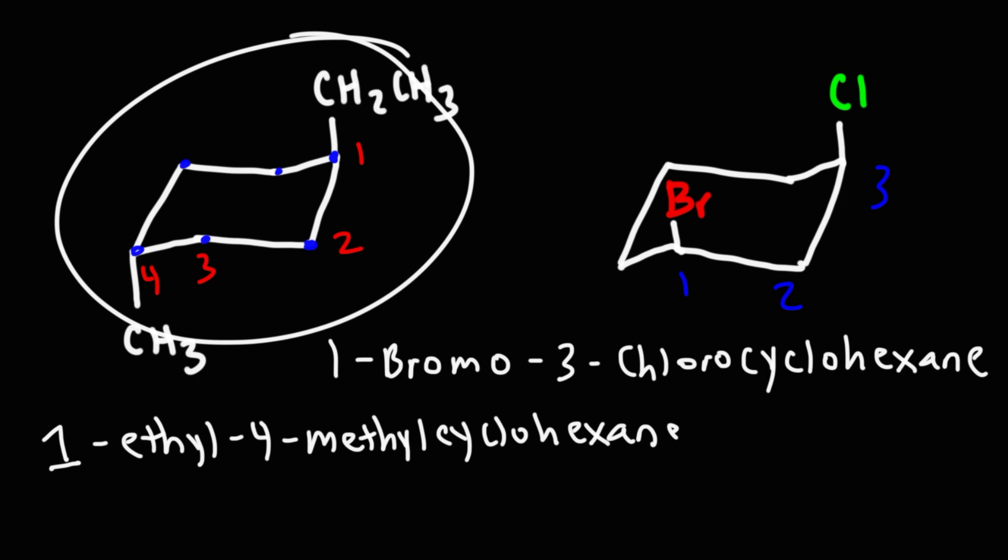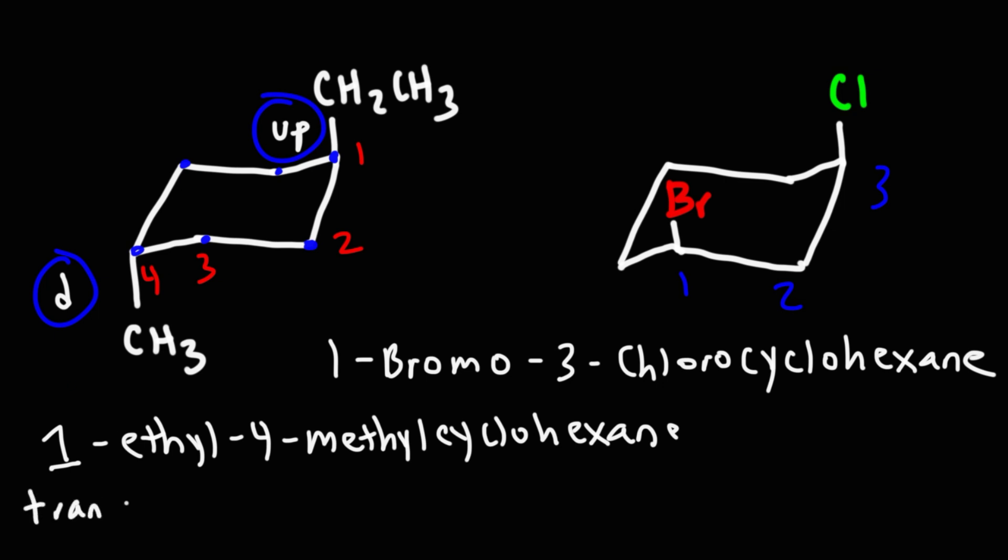Whenever you have the chair conformation, if you have two substituents, you could have cis and trans isomers. So notice that the ethyl group is in the axial up position. The methyl group is in the axial down position. So because one is down and the other is up, this is going to be trans. So we can say this is trans-1-ethyl-4-methylcyclohexane.